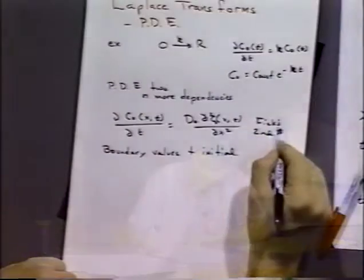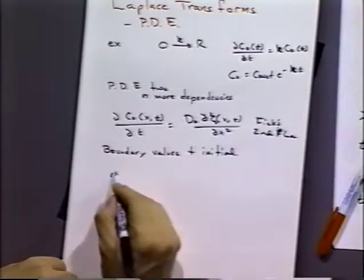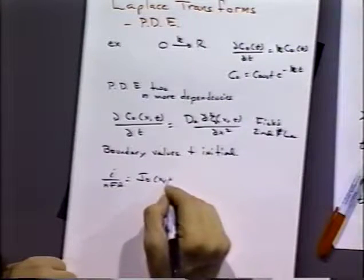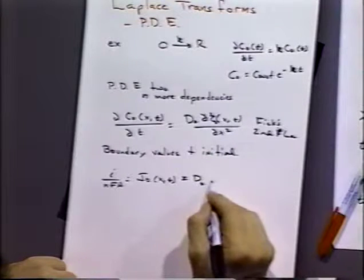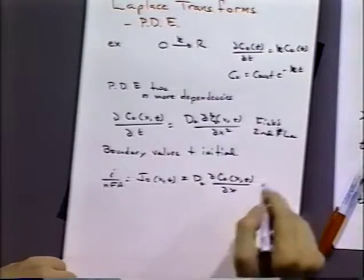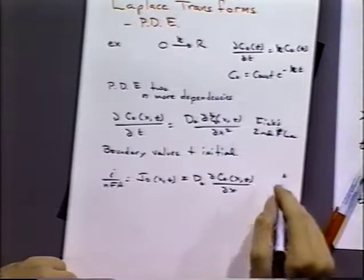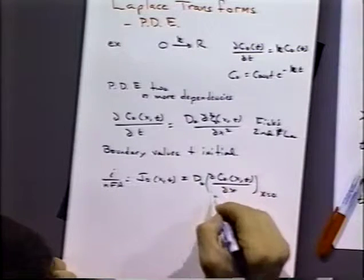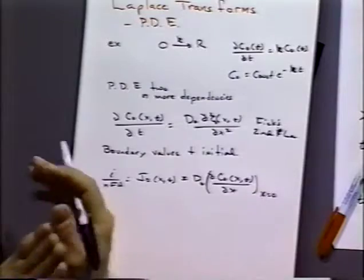We're going to be interested in two equations: the second law — Fick's second law — and the first law, which is the current or the flux relationship, for species O. For our Fick's first law situation, we're considering the situation at the interface or the boundary between the electrode and the solution. So we're really only interested in the flux at the interface and Fick's first law.